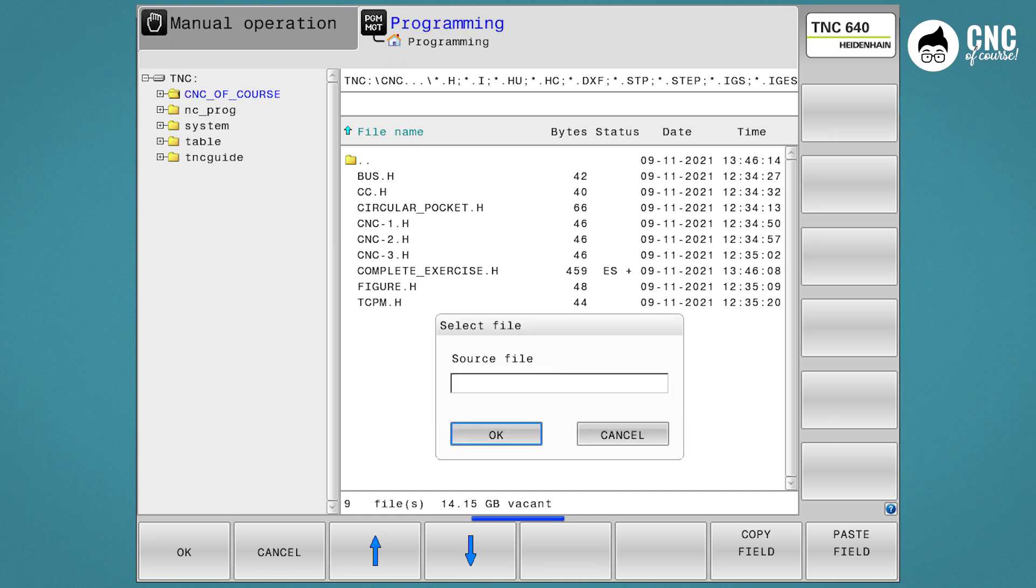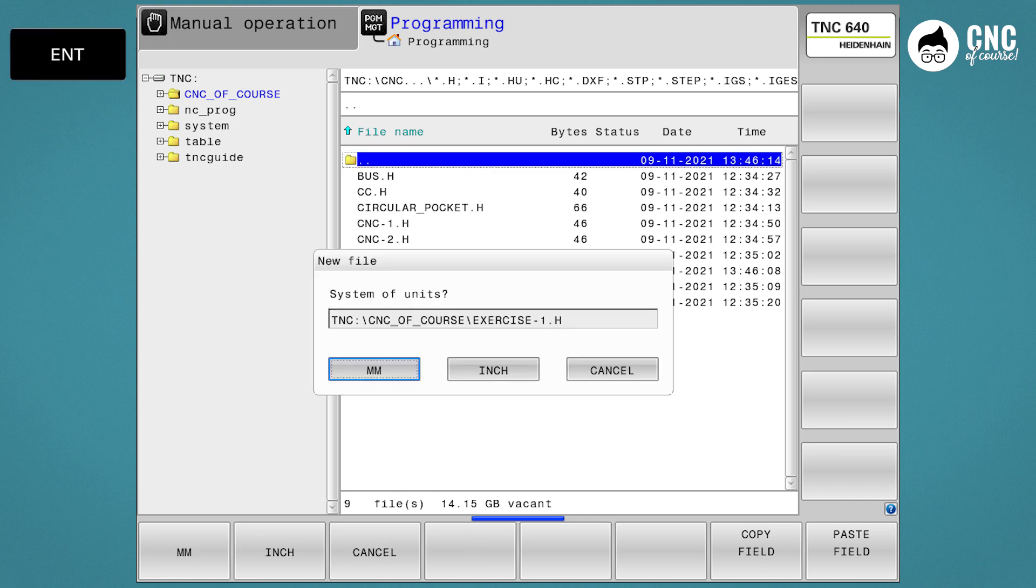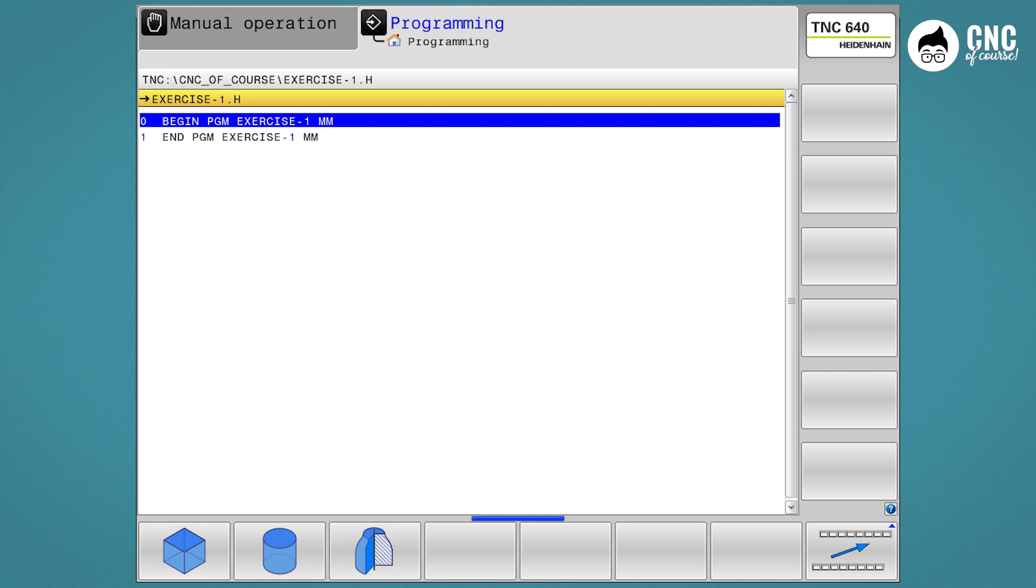Now move to the right with the arrows and enter the name of your program followed by H. For example, exercise 1H and confirm with Enter. We have created our program. The first question the control will ask is what measurement unit we want to work with. We will answer millimeters. At this point, our program has been started and the control already suggests through the soft keys to define our blank. We will stop here for now.